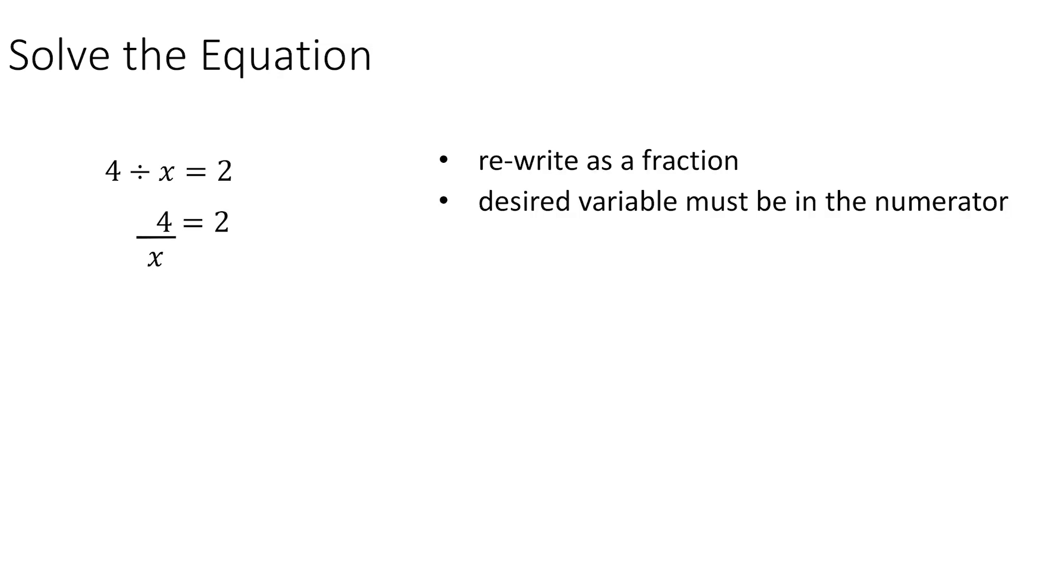We're going to multiply both sides by x so that the x's on the left cancel, and then we have a positive x quantity in the numerator on the right-hand side. So this would simplify to 4 is equal to 2x.